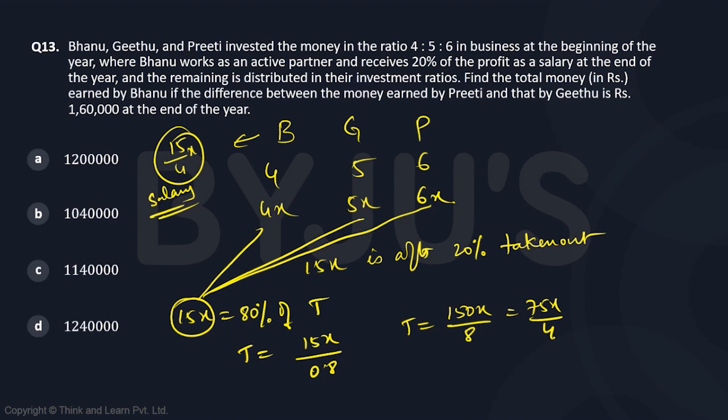Now what they are saying is Preeti and Gitu, this difference what they got 5x and 6x, this difference 6x minus 5x is 1.6 lakhs, which means x is equal to 1.6 lakh.